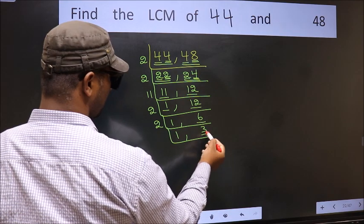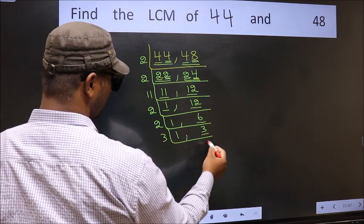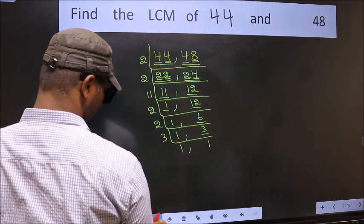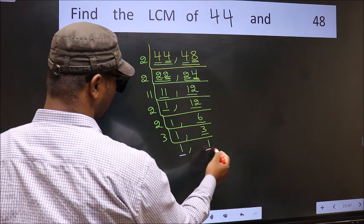Now we have 3, 3 is a prime number so 3 times 1 is 3. So we got 1 in both the places.